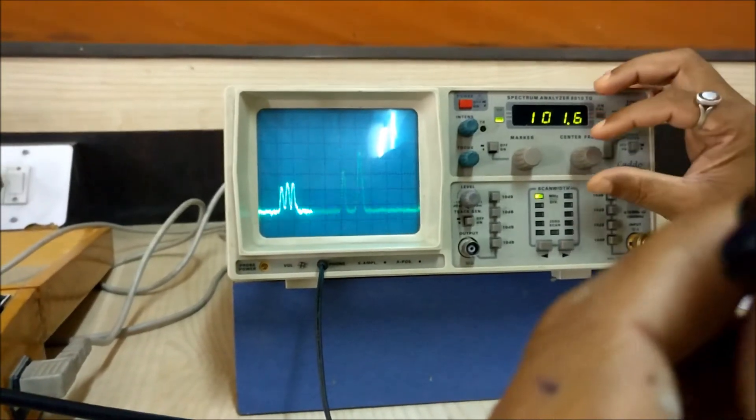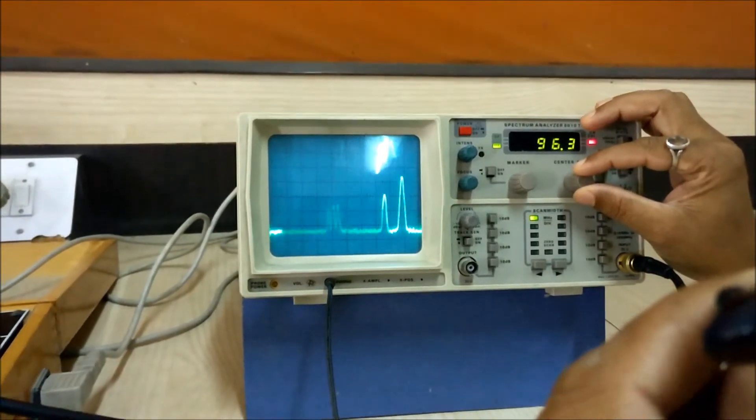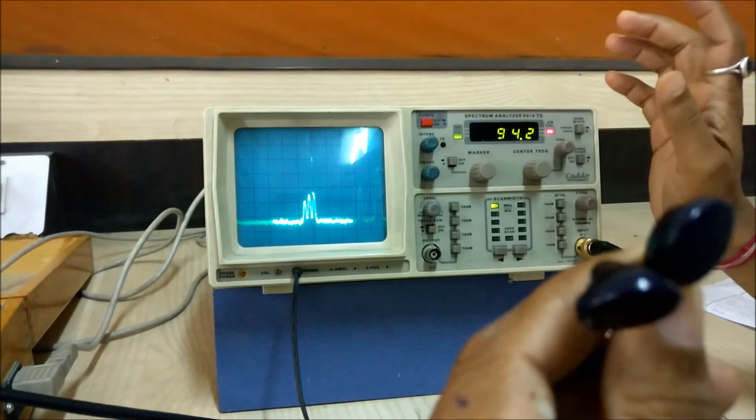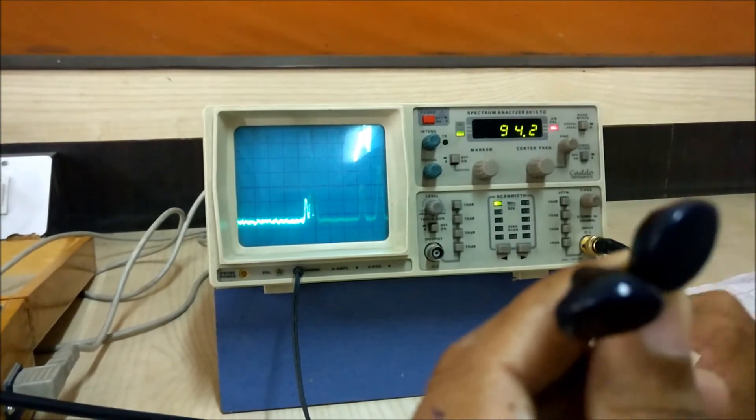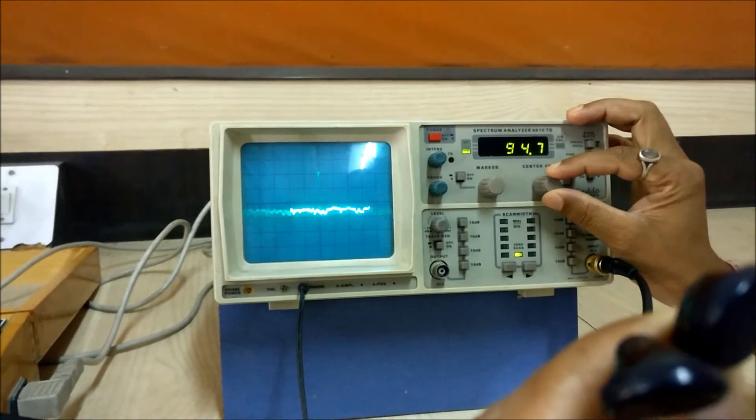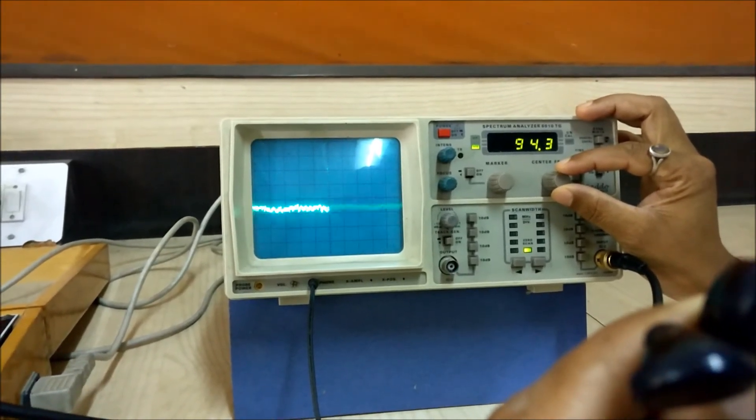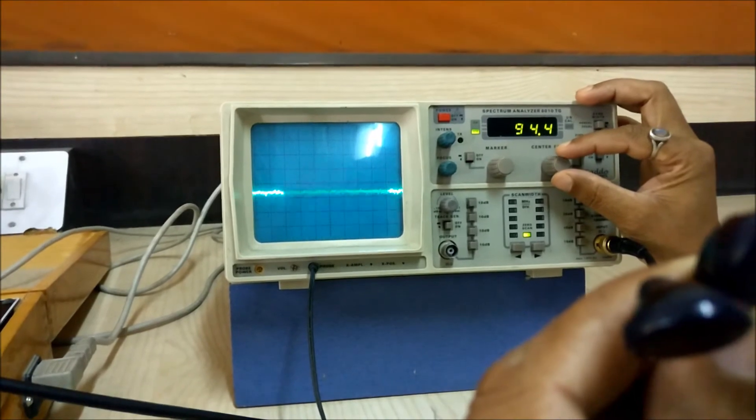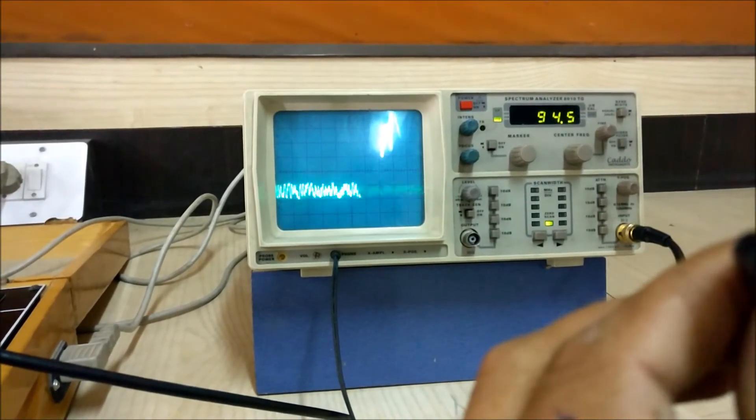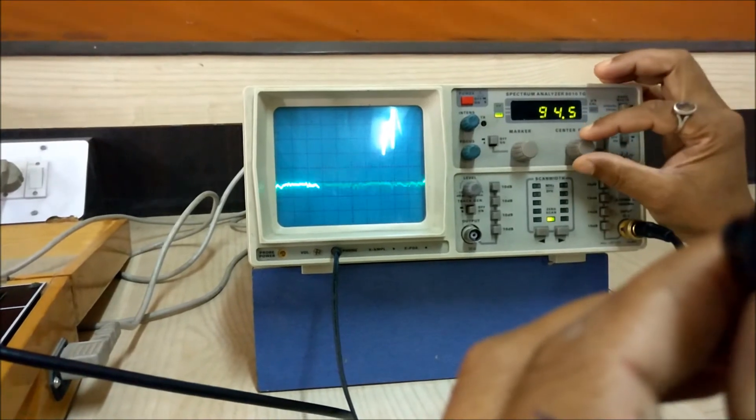So we can see from the spectrum. Now I am moving towards 94.3 FM. So if I keep this scan width, you can see exactly 94.3 FM is coming.